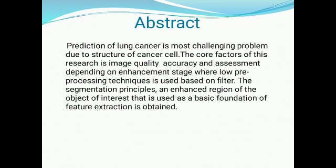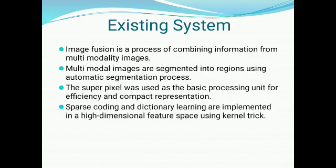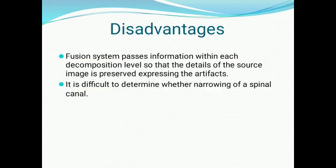In the existing system, a wiener filter is used to filter the CT image, where a superpixel was used as the basic processing unit for efficiency and compact representation. The main disadvantage of the existing system is that the fusion system passes information within each decomposition level, so the detail of the source image is not accurate.